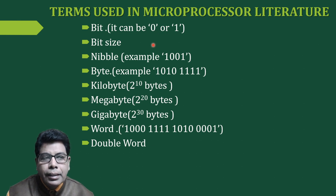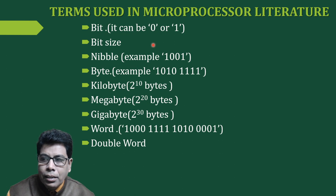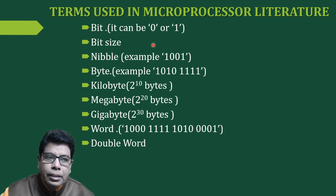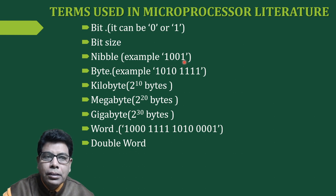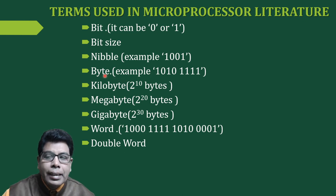The next term is nibble. A 4-bit binary number is called a nibble. For example, 1001 is one nibble. When we say 8-bit, it will have two nibbles: the lower nibble and the upper nibble.